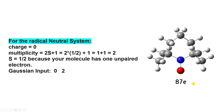The total charge of the system is 0. The total number of electrons in the system is 87, so there is one unpaired electron. Therefore S equals 1/2, because this molecule has one unpaired electron. To calculate the spin multiplicity for this radical neutral system, we use the formula 2S + 1, so we put 2 into bracket 1/2.